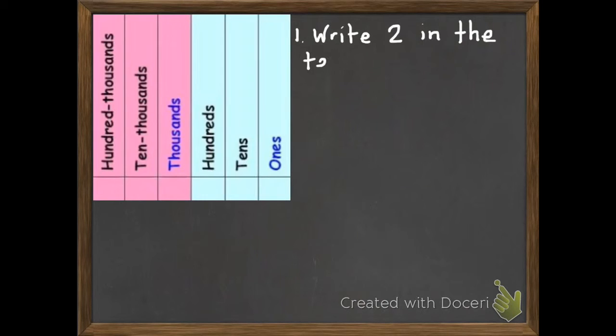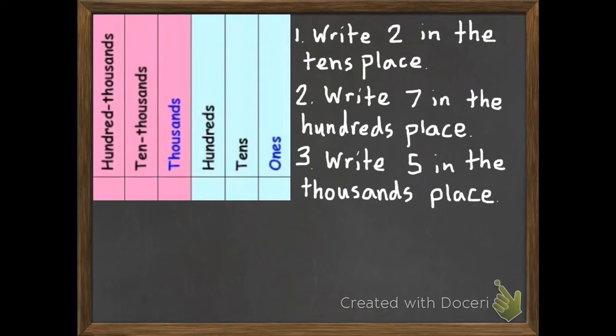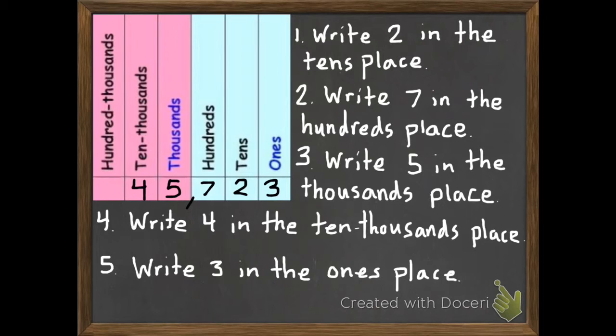One more problem for you to do. Write a two in the tens place. Write a seven in the hundreds place. Write five in the thousands place. Write four in the ten thousands place. And then write a three in the ones place. Once again, pause this until you've written it down and then we'll check your work. Okay, you should have gotten 45,723.